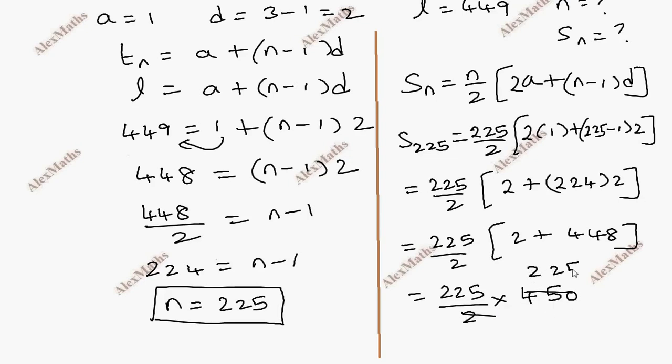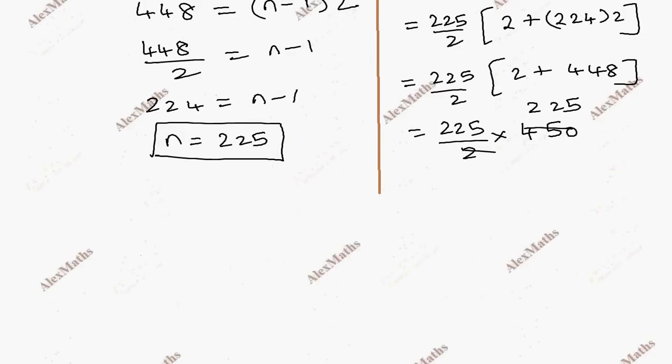225 by 2 into 450. So, 225 by 2 into 450. Total 225 into 225. This product is 50625.